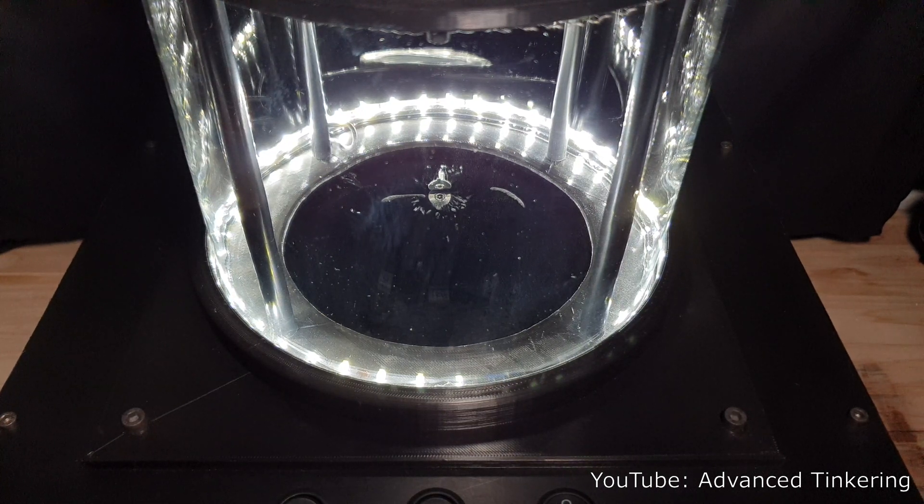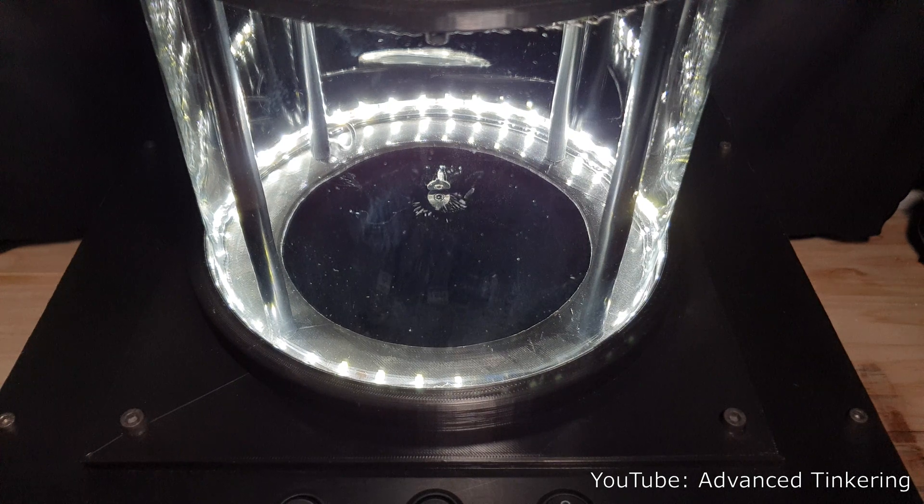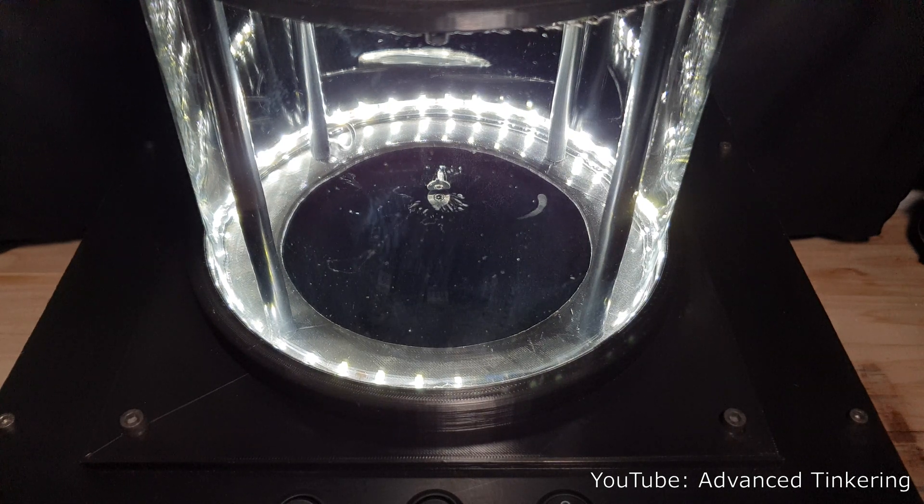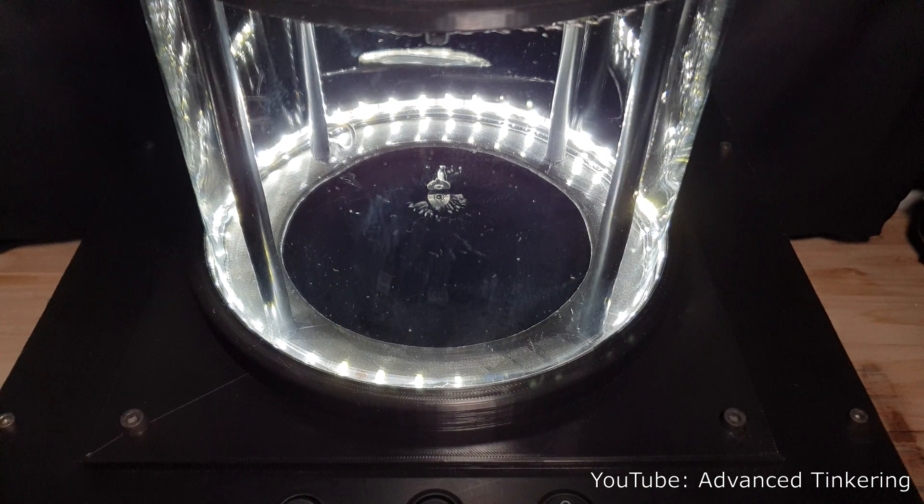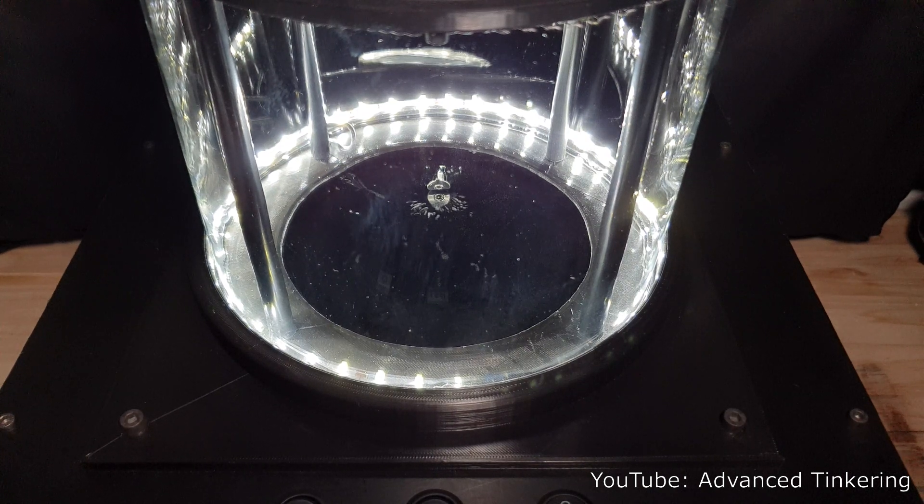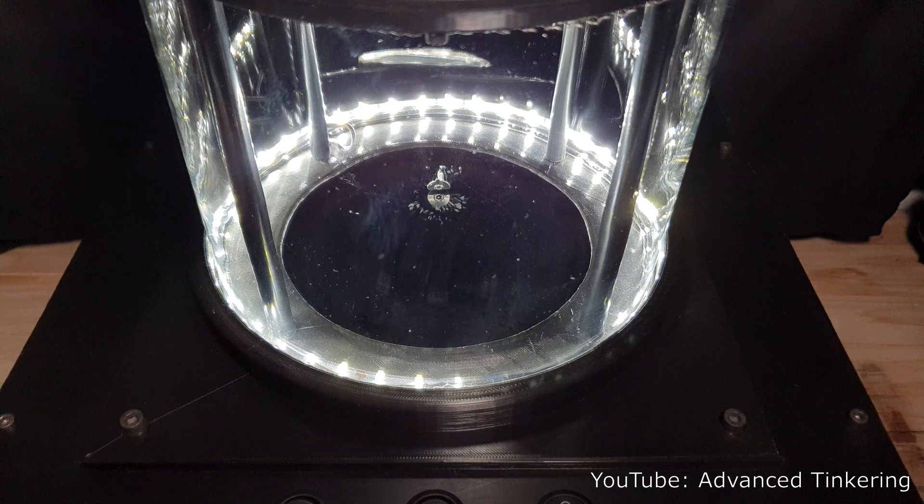The cold plate of the cloud chamber is cooled to around minus 35 degrees Celsius. You could use dry ice to cool the plate if you wanted to build a quick and cheap cloud chamber. In my case, Peltier elements are used to cool the plate.